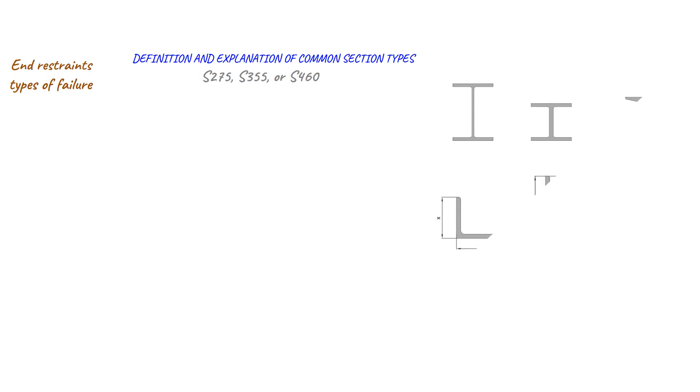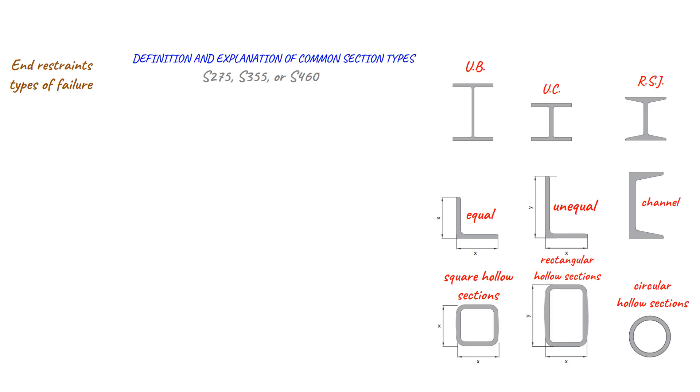Some common section types include equal and unequal angle sections, channel sections, square hollow sections, rectangular hollow sections, and circular hollow sections. It's important to choose the appropriate section type for your specific project based on the required strength and stiffness.